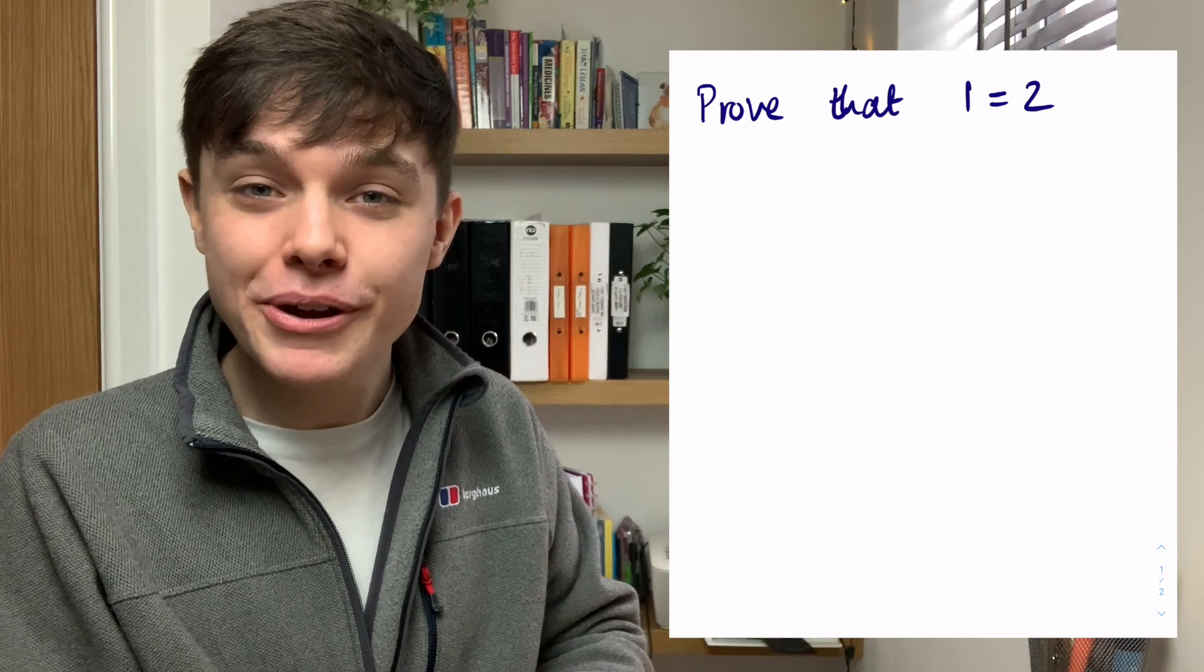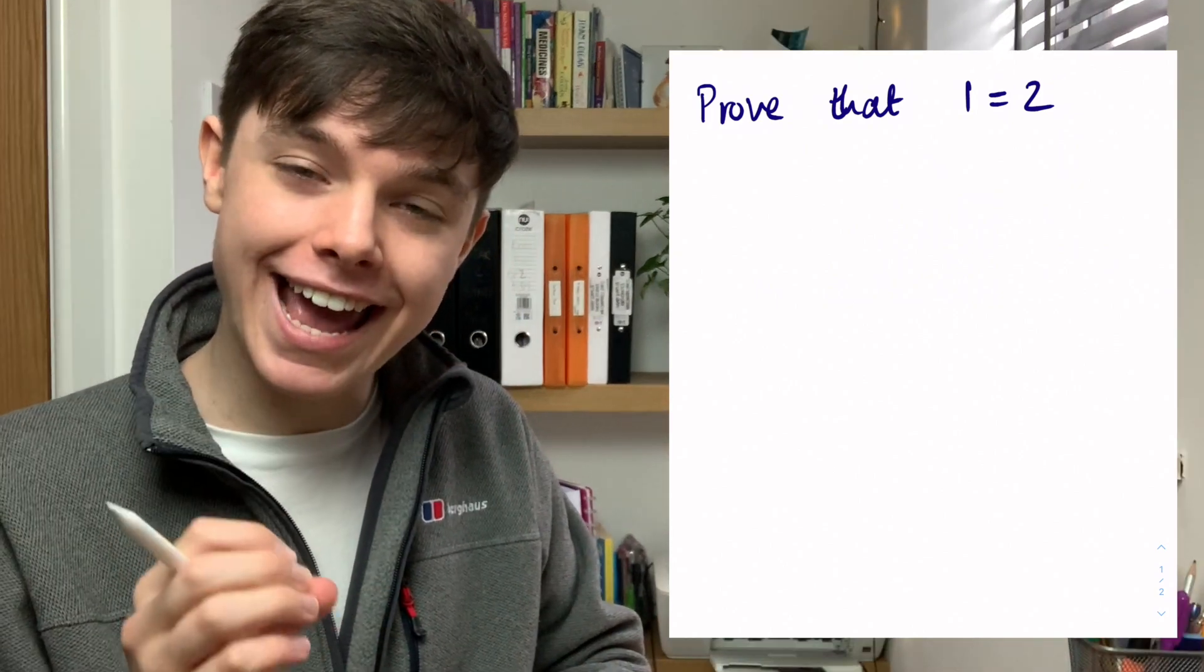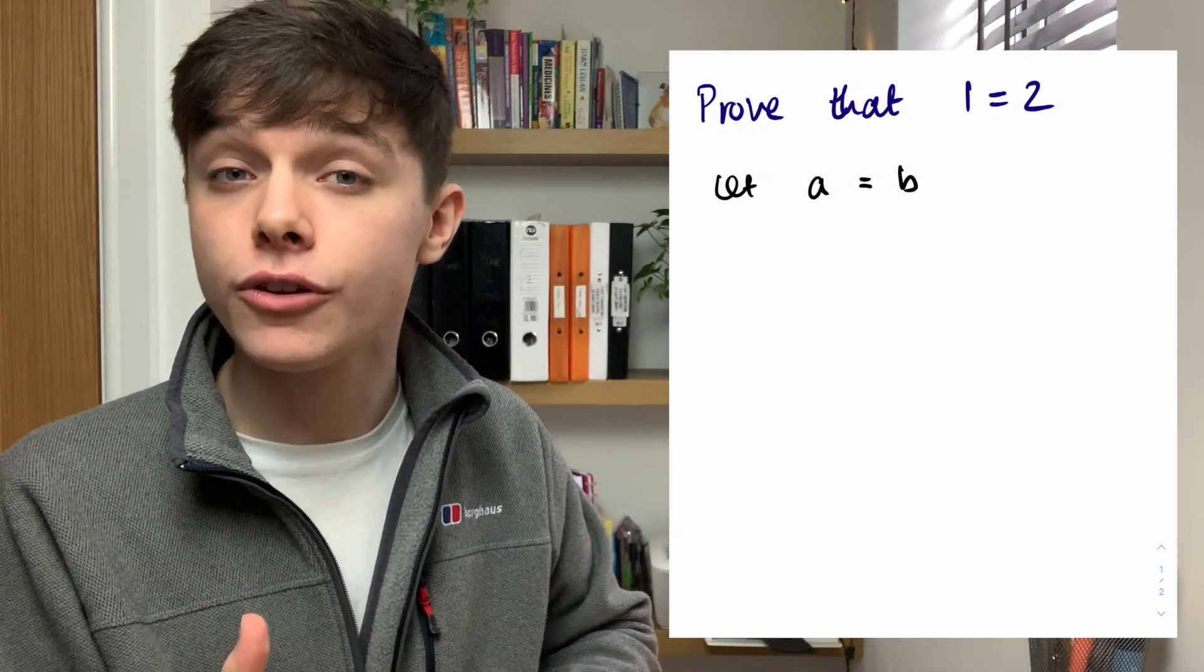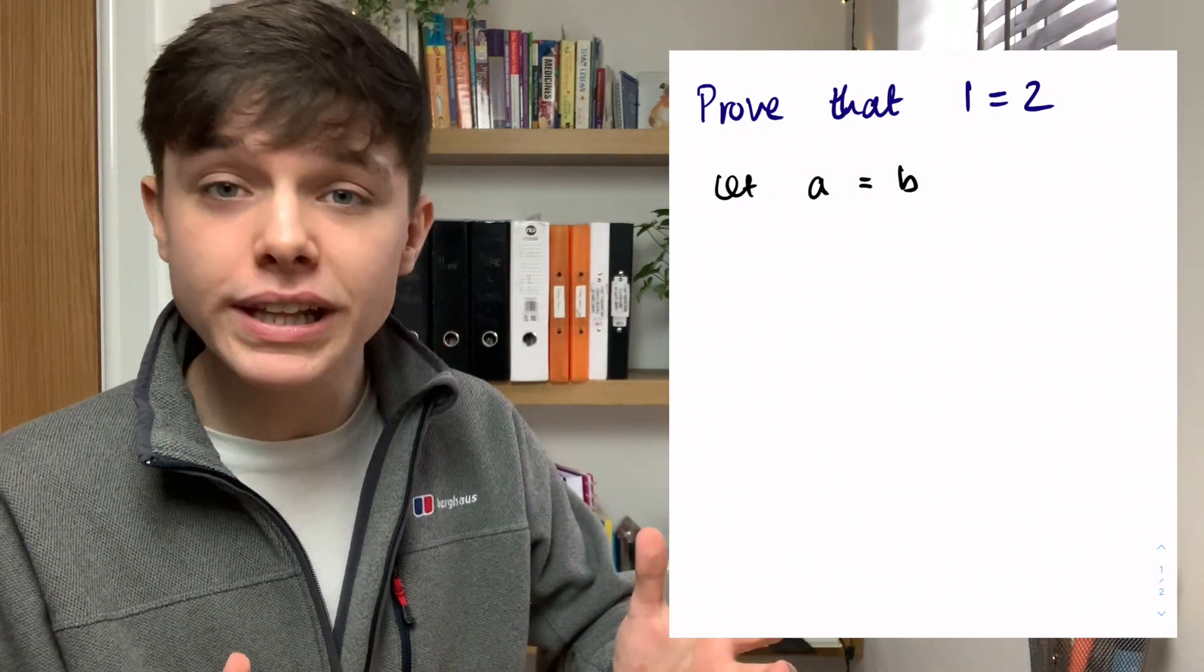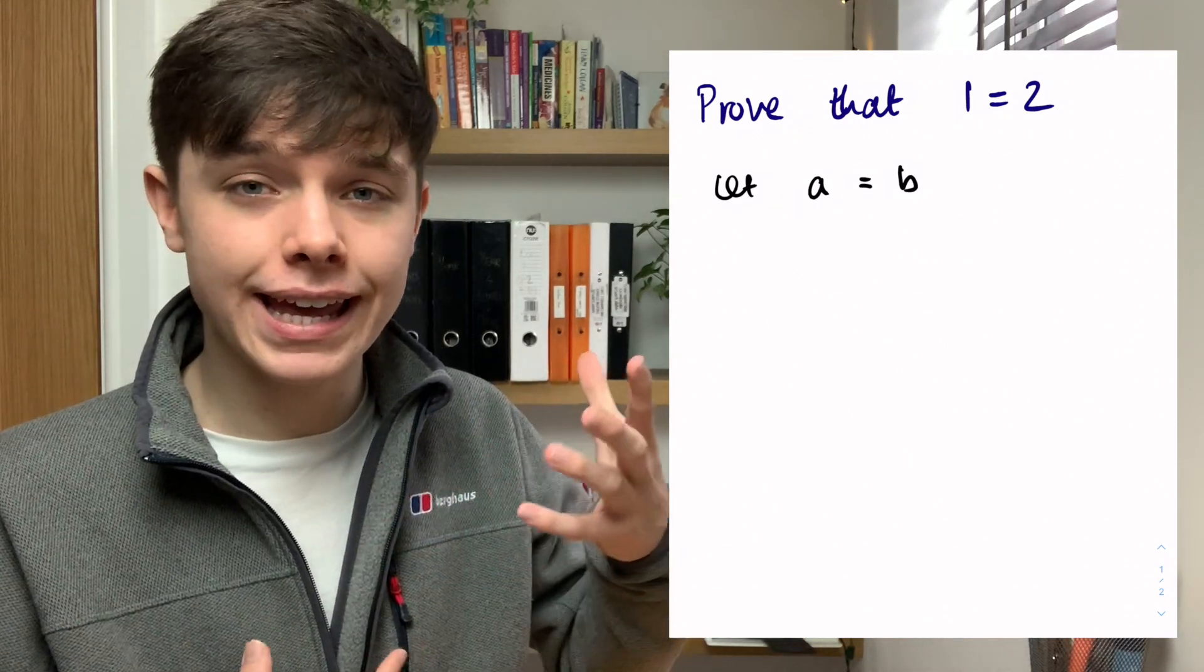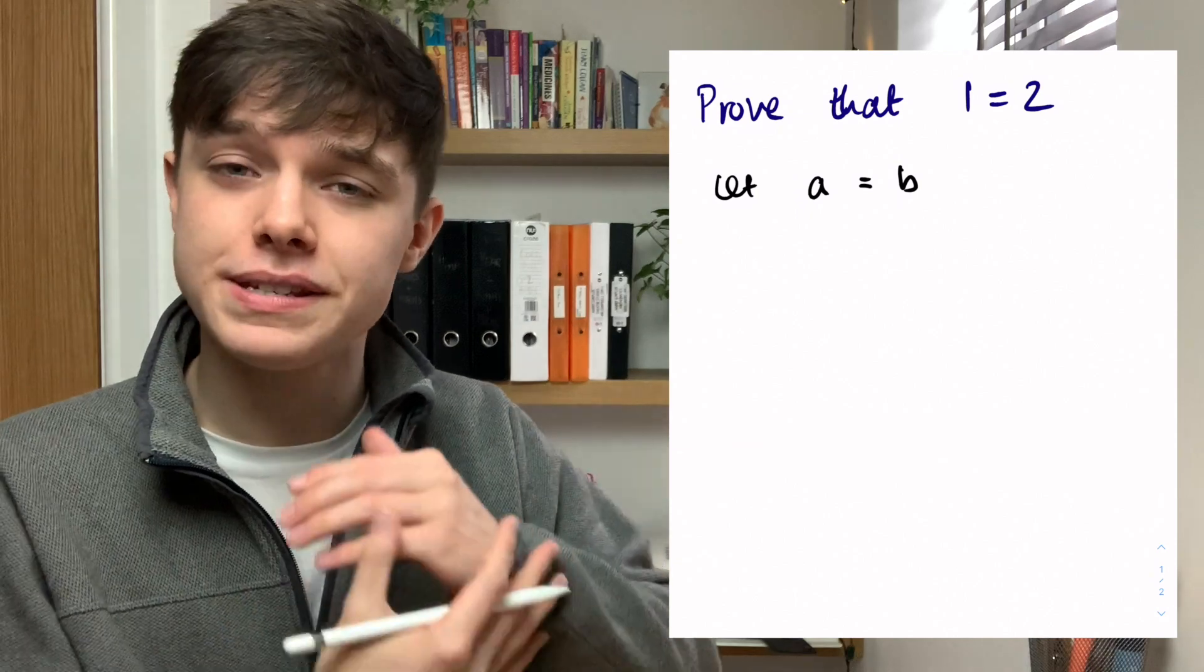The first thing I'm going to do is I'm going to let a equal b. Now what that means is that any number that a is, b is also that number. So if we let a equal 2, b equals 2. If we let a equal 20, b equals 20 and so on.